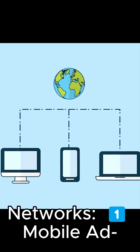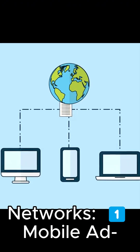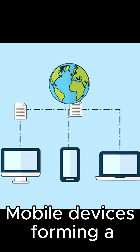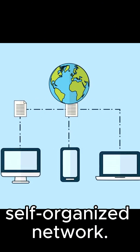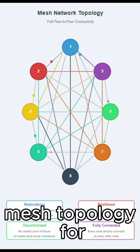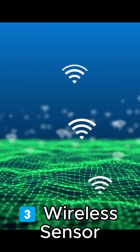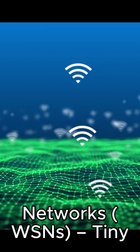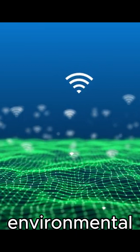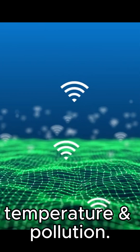Types of ad hoc networks: One, Mobile Ad Hoc Networks (MANETs) — mobile devices forming a self-organized network. Two, Wireless Mesh Networks (WMNs) — radio nodes creating a mesh topology for better coverage. Three, Wireless Sensor Networks (WSNs) — tiny sensors monitoring environmental conditions like temperature and pollution.